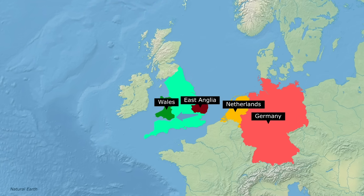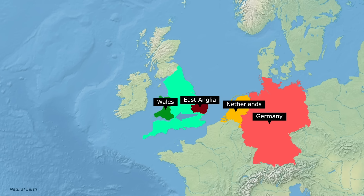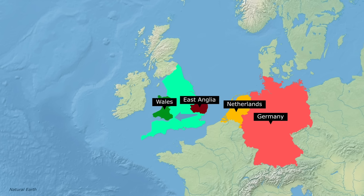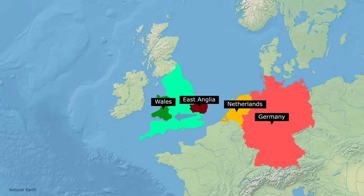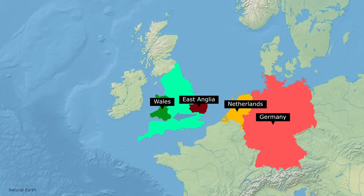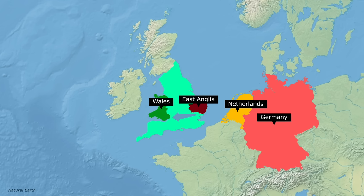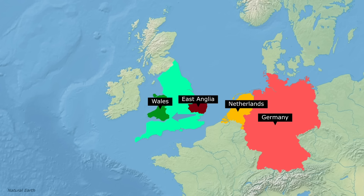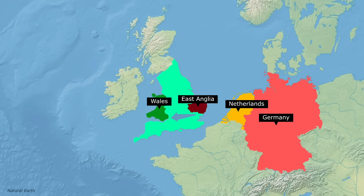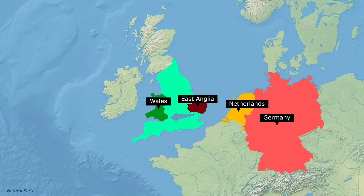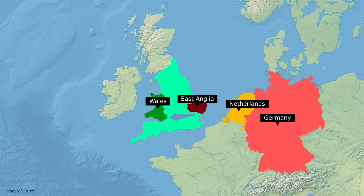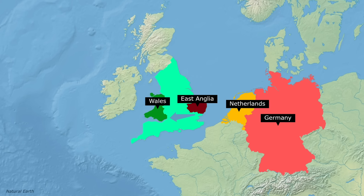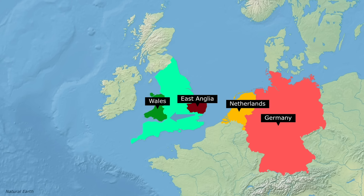Overall, while both are closely related in general, the English and the Welsh have been shaped by different demographic histories — one of relative isolation in Wales, and one of successive migrations and admixture in England.